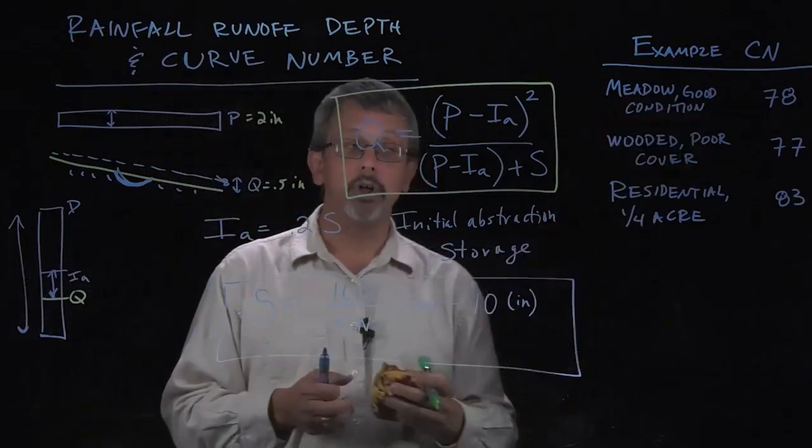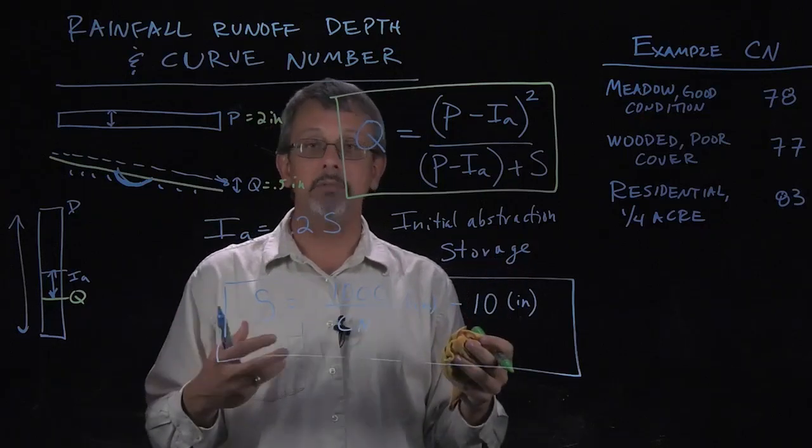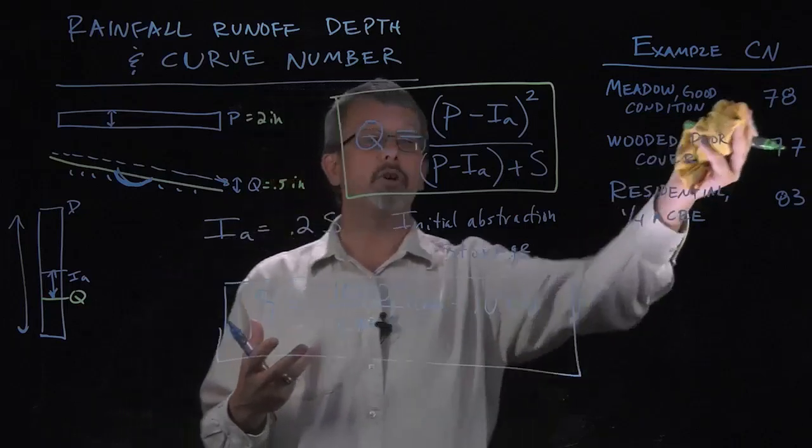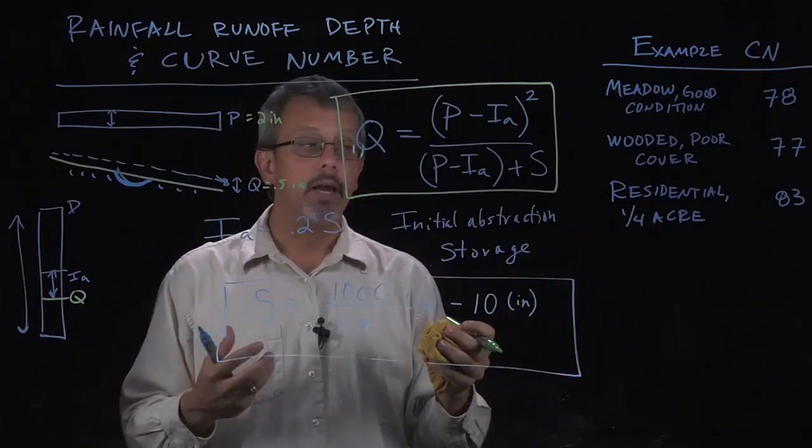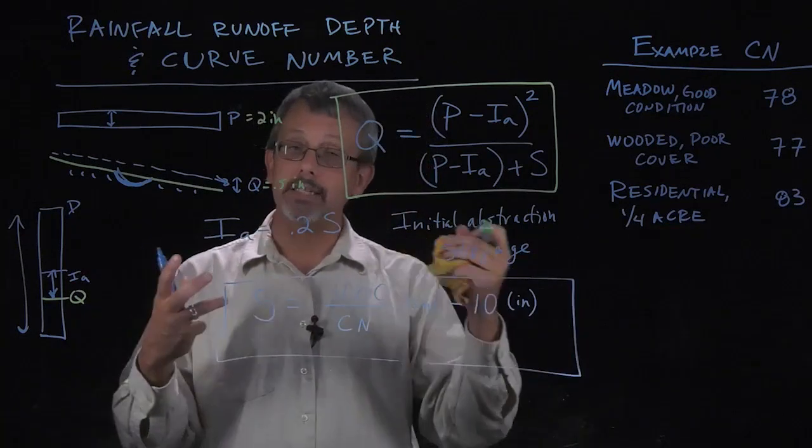Here's some example curve numbers. If you had a meadow that was considered to be in good condition, maybe the grass is growing everywhere, there's not big ruts and things like that in it, it would have a curve number 78 compared to something like a residential lot.